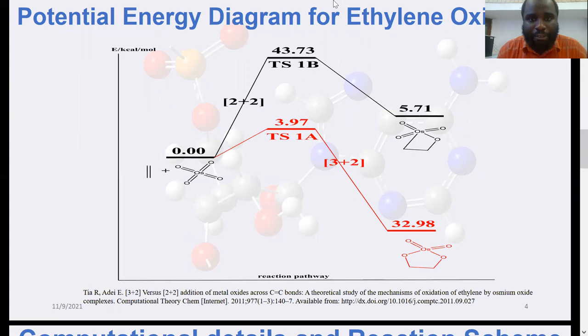Over the past years, there have been several quantum studies on the reaction mechanisms of the addition of ethylene to osmium tetroxide. The red lines represent the 3+2 pathways, and the black lines represent the 2+2 pathways. From this energy profile, it is evident that the addition of ethylene to osmium tetroxide will proceed via the 3+2, because we are seeing low activation barriers and negative reaction energies, telling us that the 3+2 reaction surface is quite spontaneous compared to the 2+2 surface.